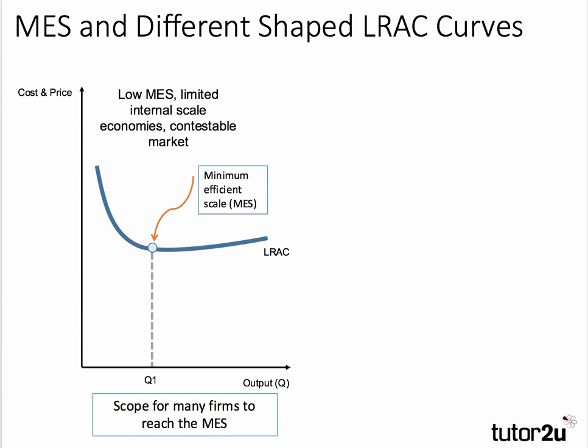The minimum efficient scale will vary between industries, and this is a key factor determining how competitive or how contestable a market is. In my diagram on the left hand side, I've drawn a long run average cost curve where the minimum efficient scale is reached at a fairly low output, relative to the level of market demand. If the MES is pretty low, then the market is going to be contestable — there is scope for many businesses to reach that point.